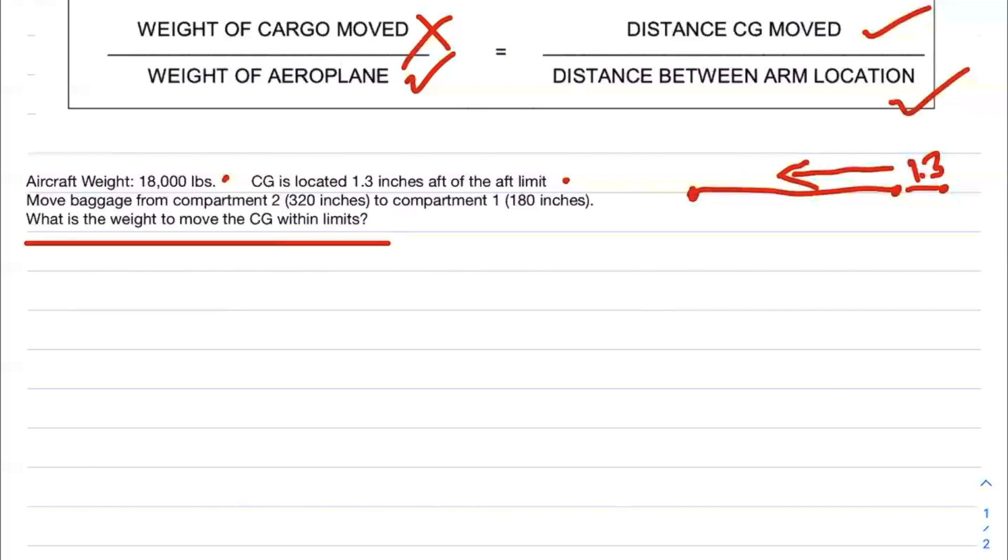What's the weight of the cargo moved? We don't know that - that's what we want to figure out. We label that X. What's the weight of the aircraft? It says 18,000 pounds. So I'm going to plug in 18,000 pounds equals the distance the CG moved. In this case, it's 1.3 inches aft of the aft limit, so we'll use 1.3.